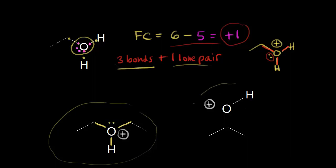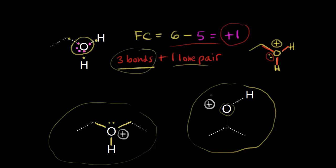Now to our other example on the right — this oxygen has a plus one formal charge, so it must have three bonds and one lone pair. Here are the three bonds: one, two, and three. I didn't draw in the lone pair of electrons on the oxygen, but the lone pair is there, so I'll go ahead and put it in. Three bonds plus one lone pair for oxygen gives us a formal charge of plus one.